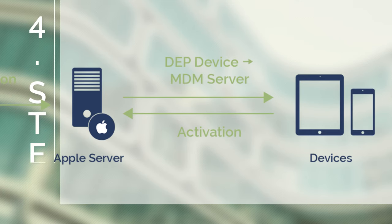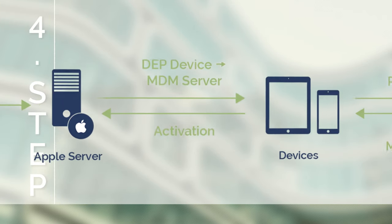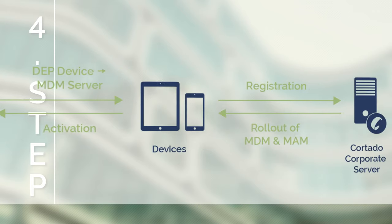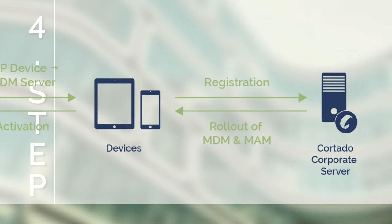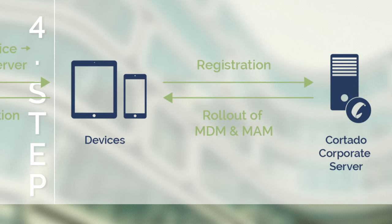Step 4: Once the device is turned on, Apple recognizes that these belong to DEP. They are then automatically redirected to the linked MDM server. The configurations that were determined by the IT admin are then transferred to the devices.